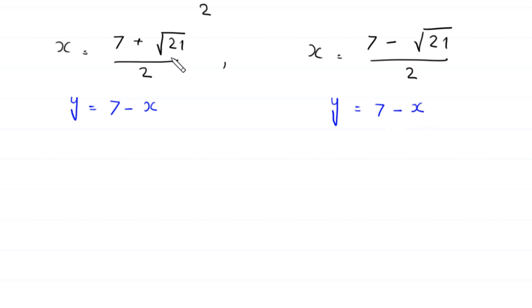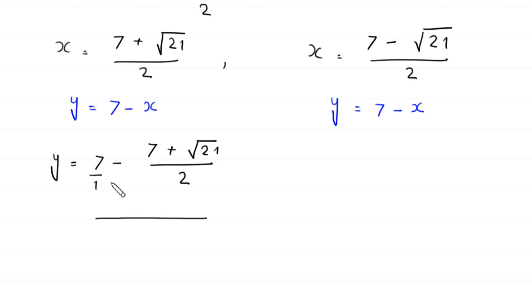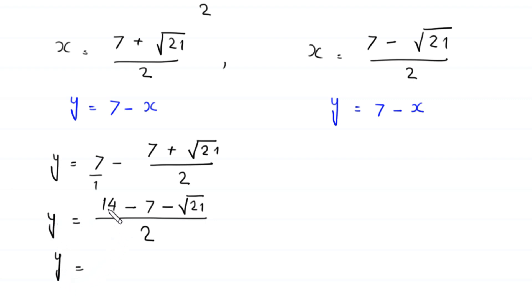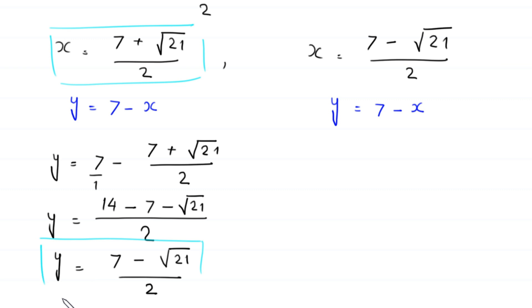When x equals (7 plus root 21) over 2, then y equals 7 minus (7 plus root 21) over 2. Taking LCM: y equals (14 minus 7 minus root 21) over 2, which gives y equals (7 minus root 21) over 2.